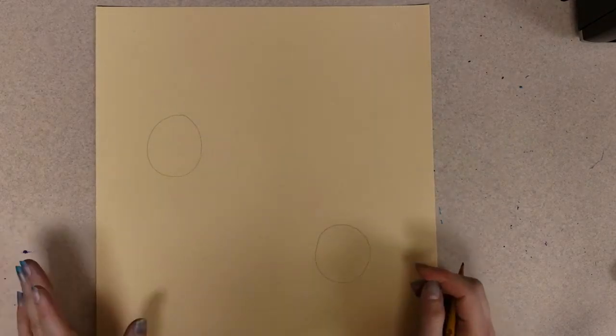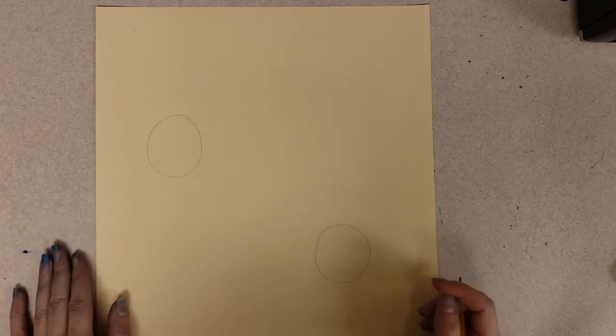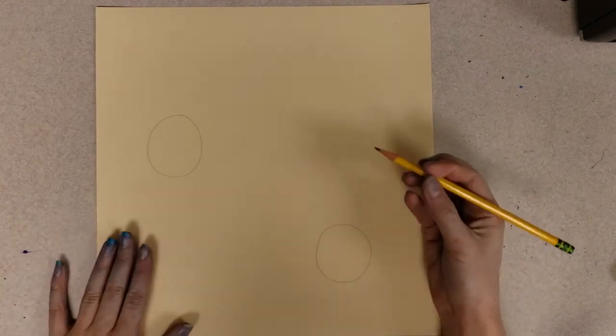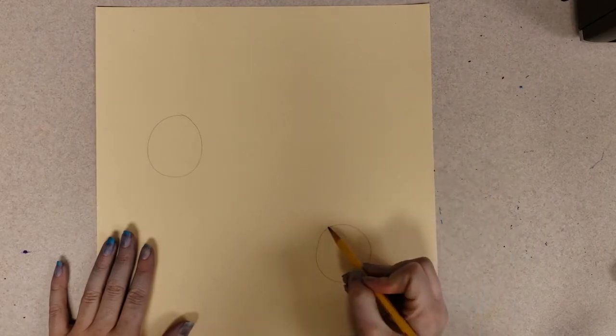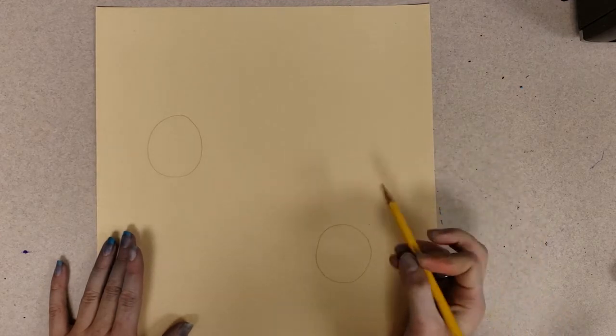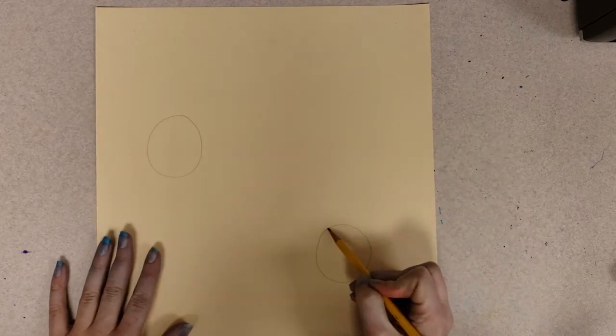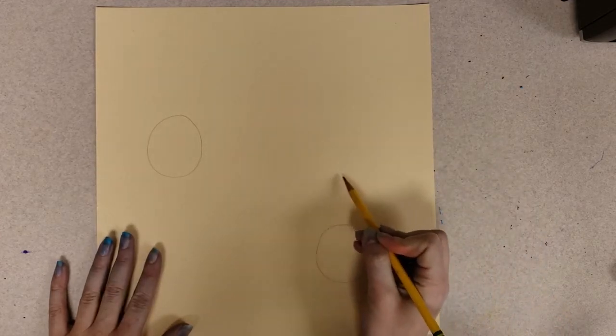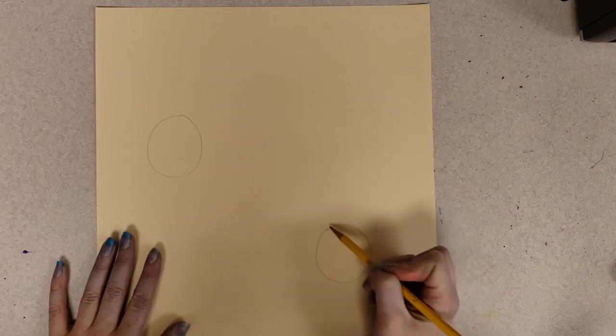Now we are going to start adding the petals to our flowers. You take your pencil and go right on the circle we just created and we're going to create wavy wiggly lines that start at our circle, come up and out, and then come back to our circle.